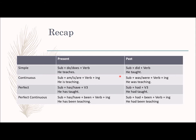Continuous tense means the action is ongoing. Present continuous indicates an action continuing now; if it's in the past, we use past continuous. Perfect tense means the activity is already done but the effect is still felt — subject plus has/have plus verb 3 form. For present perfect continuous: subject plus has/have plus been plus verb plus -ing, indicating something that has been continuing for a period of time and still continues.